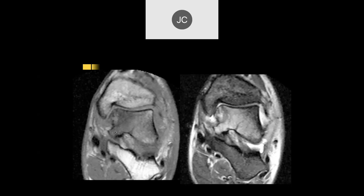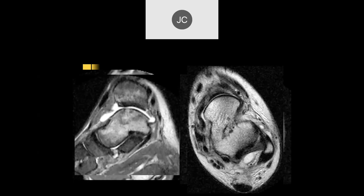There's edema in the talus with loss of normal T1 signal — a differential of trauma, chronic disease, infection, and so forth. Fluid collections are visible around it. On the sagittal images, there's loss of articular cartilage, a large effusion, and a lot of bone edema. There's a possible AVM on the differential, but this was all infection — osteomyelitis and infection within the joint.